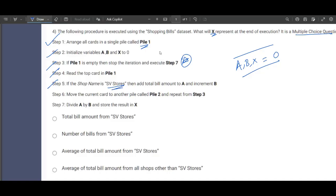If the shop name is SV Stores, so what happens if the shop name is SV Stores? Then what we do is that we add total bill to A. A is A plus X dot total bill amount, and we will have to increment B.